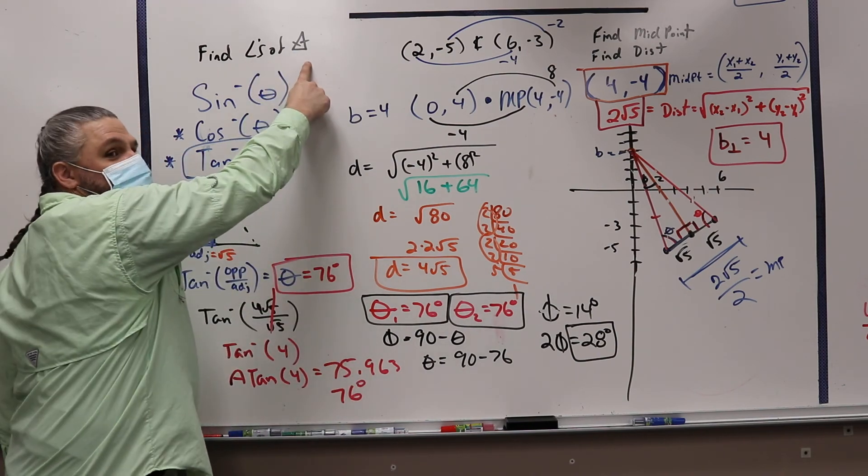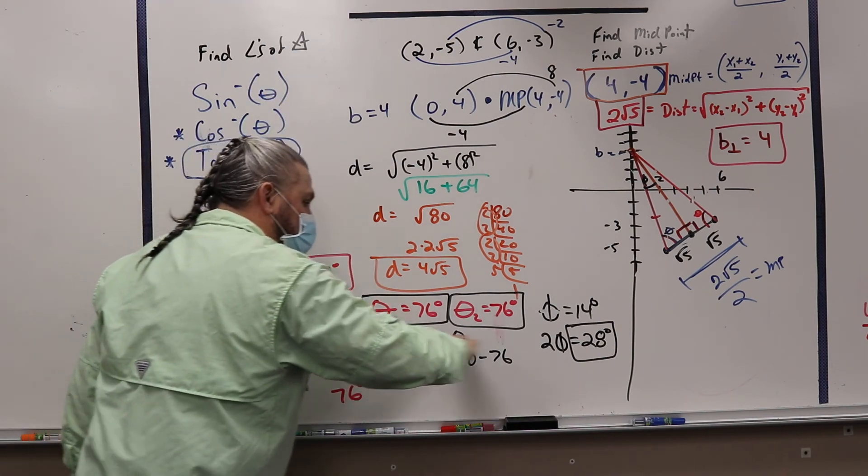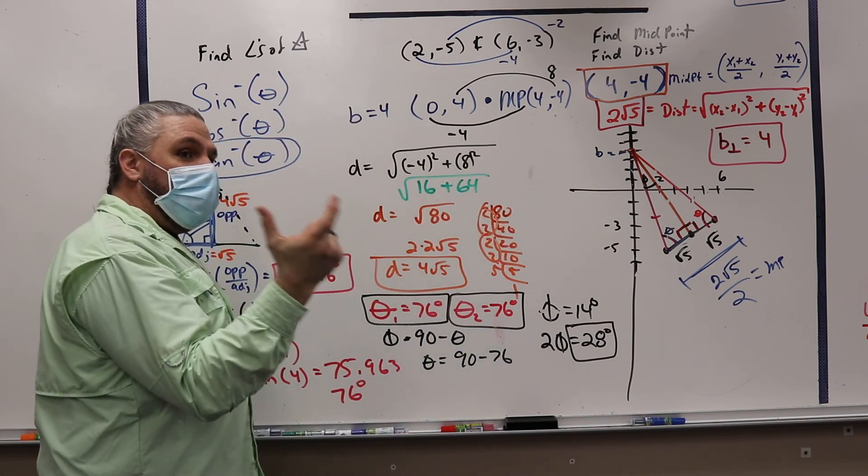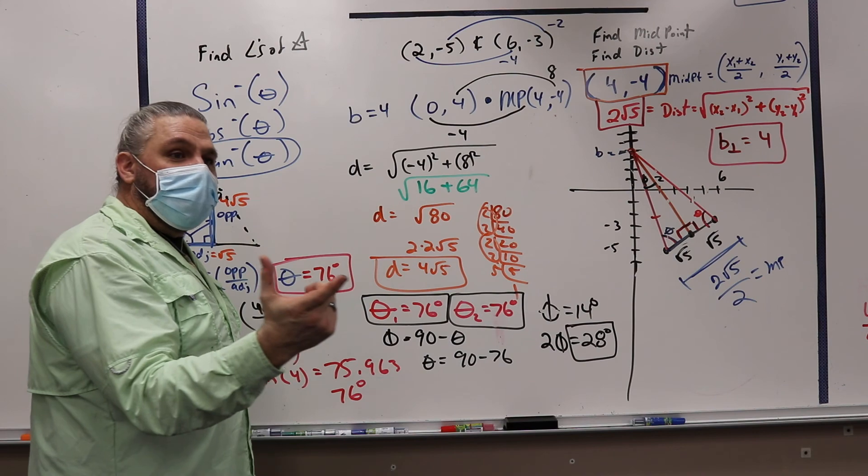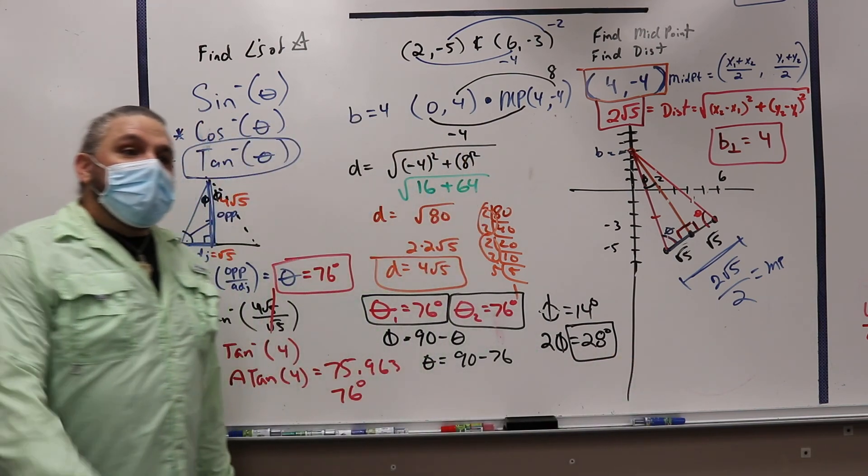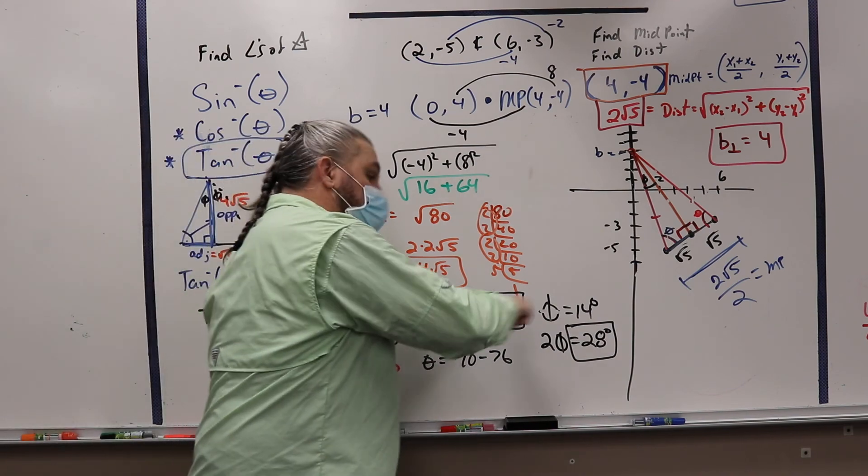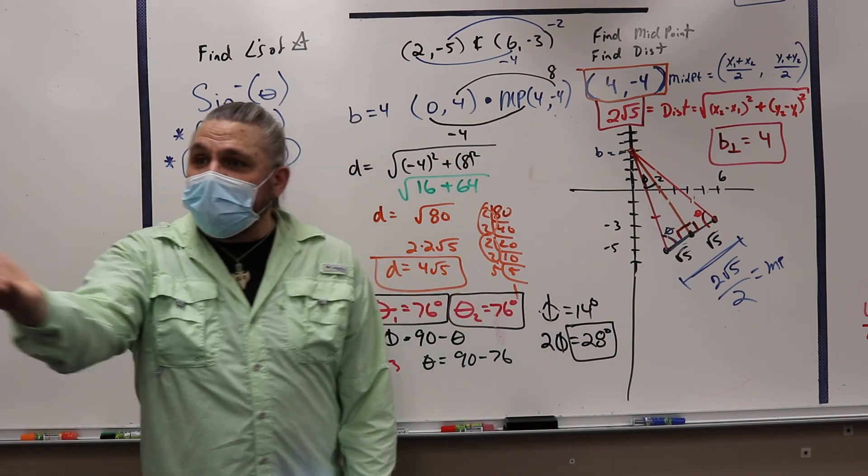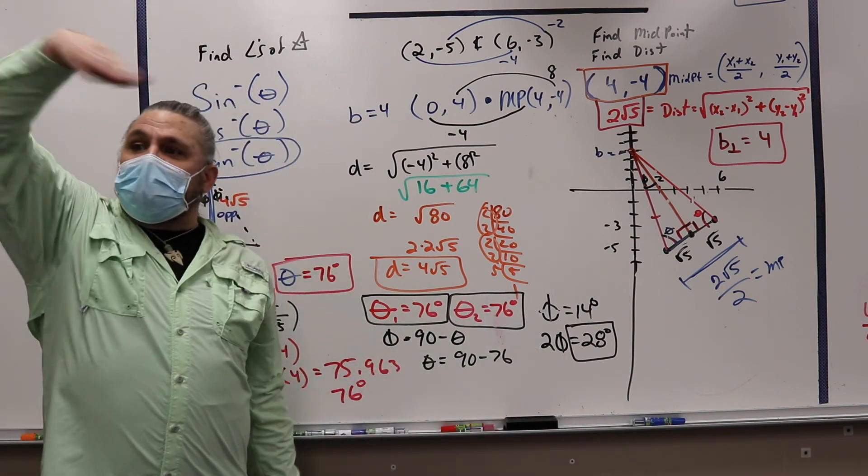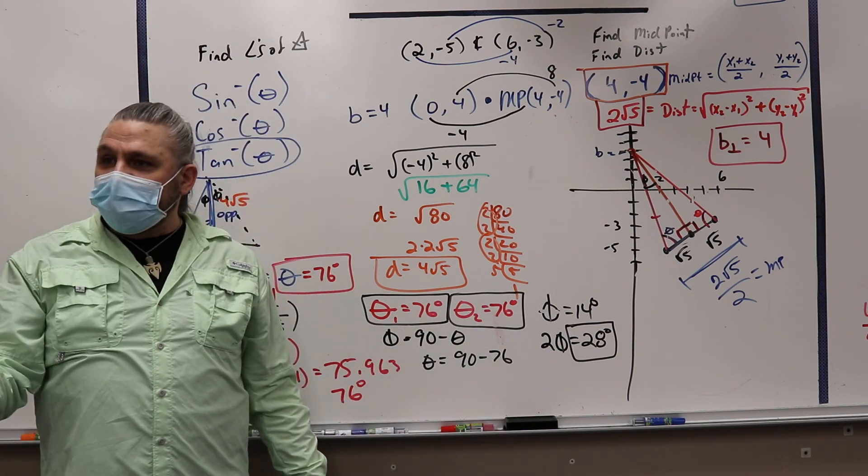So yeah, the inverse tangent of 4, which is 76 degrees, but we have to find all the angles. So that's why we're finding 76 and 76 for the two base angles. They're going to be equal because it's isosceles, right? And then the last angle, which is 28. So we could have taken the two base angles minus 180, right? And called the whole top phi.